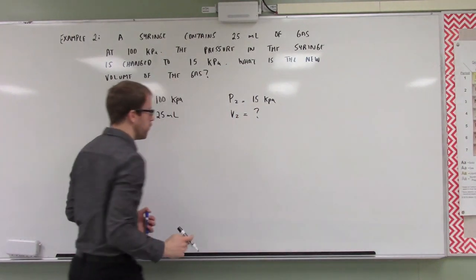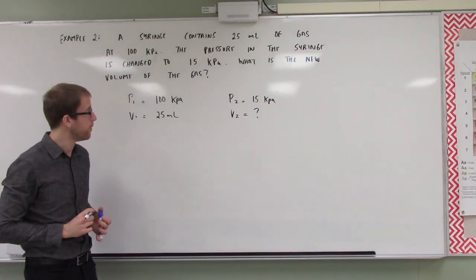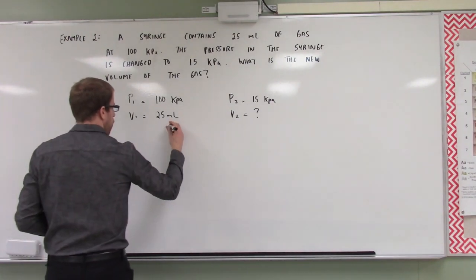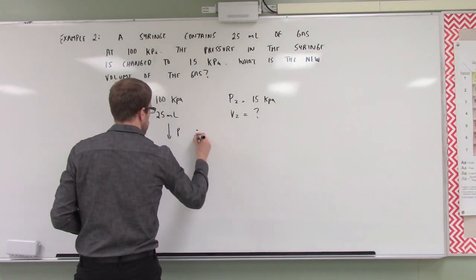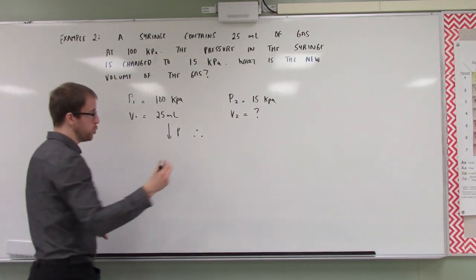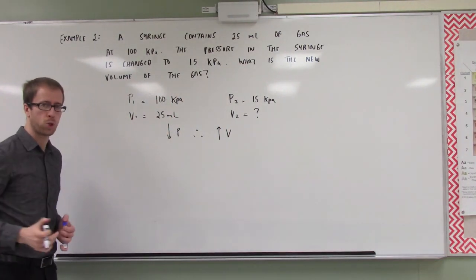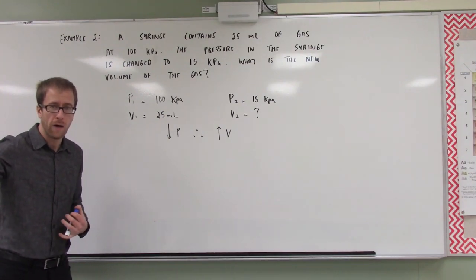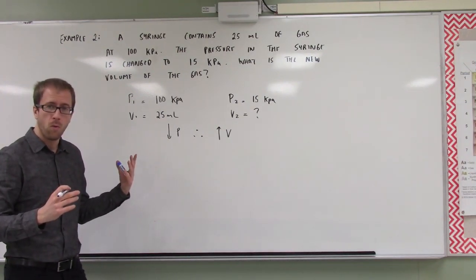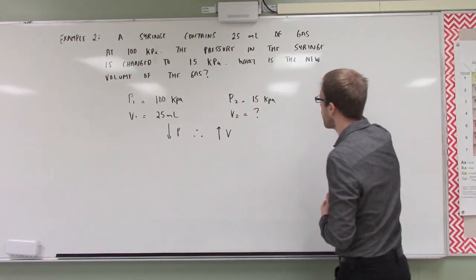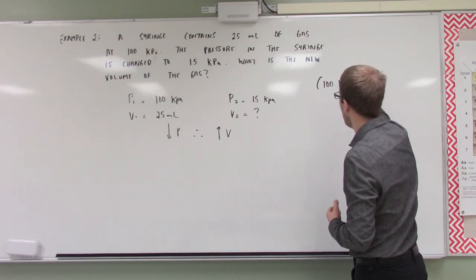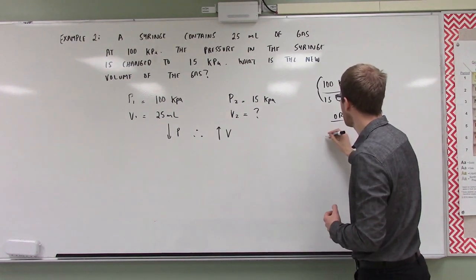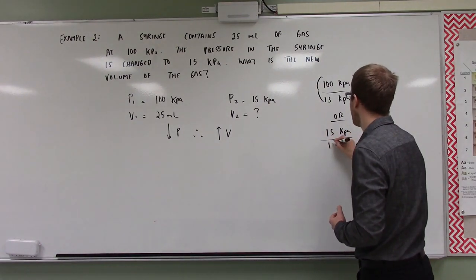Our pressure decreased. So what is the prediction? Our pressure went down, therefore our volume should increase — they are inversely proportional. So how are we going to increase our volume? We're going to multiply it by the ratio of our pressures. We have two options: we can multiply by 100 over 15, or we can multiply by 15 over 100.